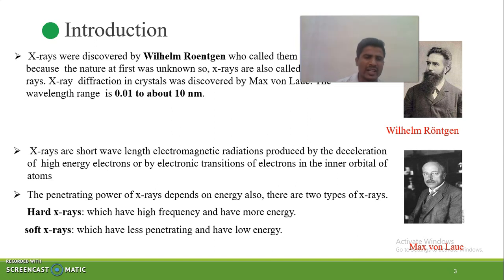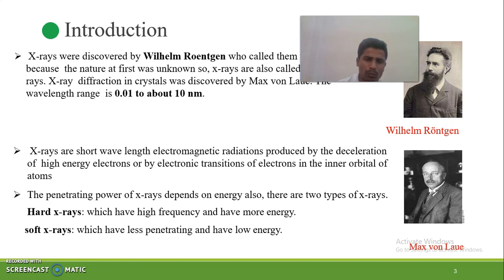A transition of electrons takes place from the outer orbital to the inner orbital, leading to the ejection of X-ray photons.